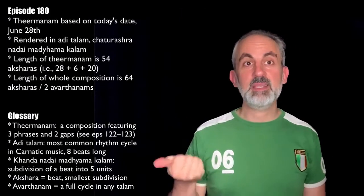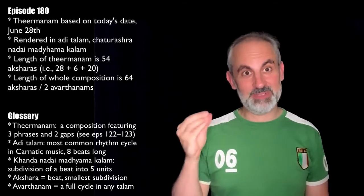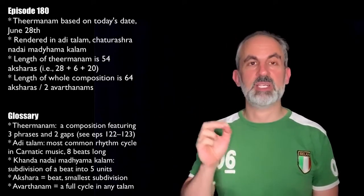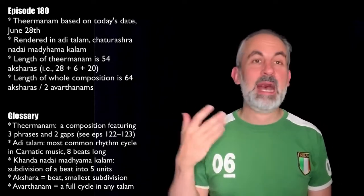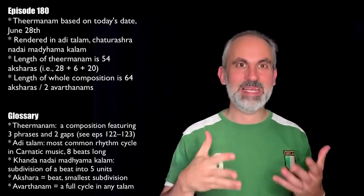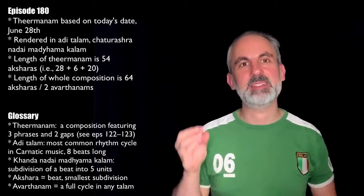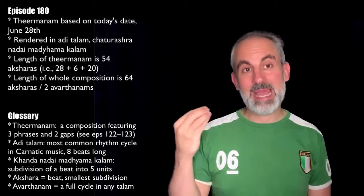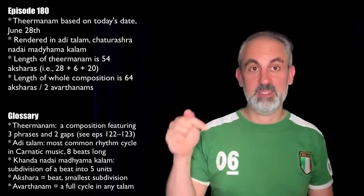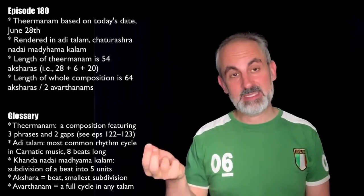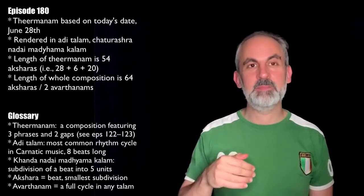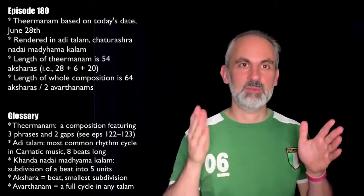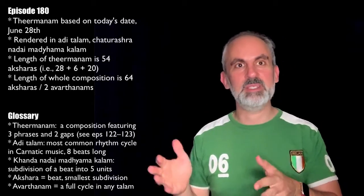I created a theermanam which is based on today's date, and it's rendered in Adi talam, Chaturashra Nadai Madhyama Kalam. The length of the theermanam is what is related to the date, because the length is 54 aksharas — and that's the number we reach when we add 28 (today's date), the number 6 (the month), and the number 20 (from 2020). So 28, 6, and 20 gives us 54.